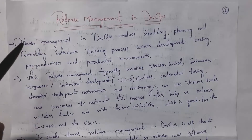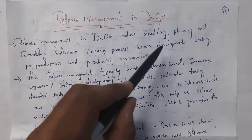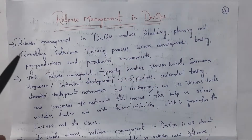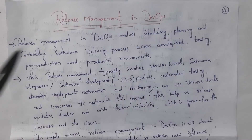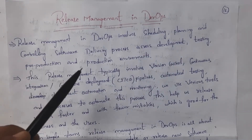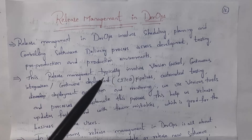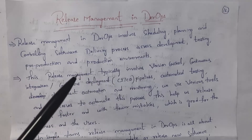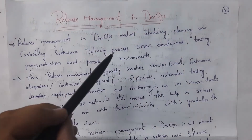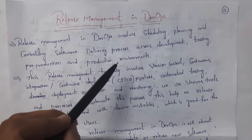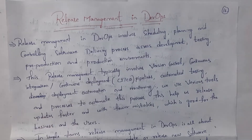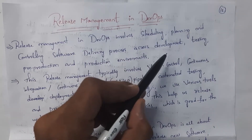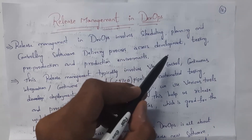Release management in DevOps includes scheduling, planning, and controlling the software development process across development, testing, pre-production, and production environments. Release management is essentially controlling the entire software development process — from developing software to placing that software in the production server. When to start and when to manage and complete all the stages comes under release management.